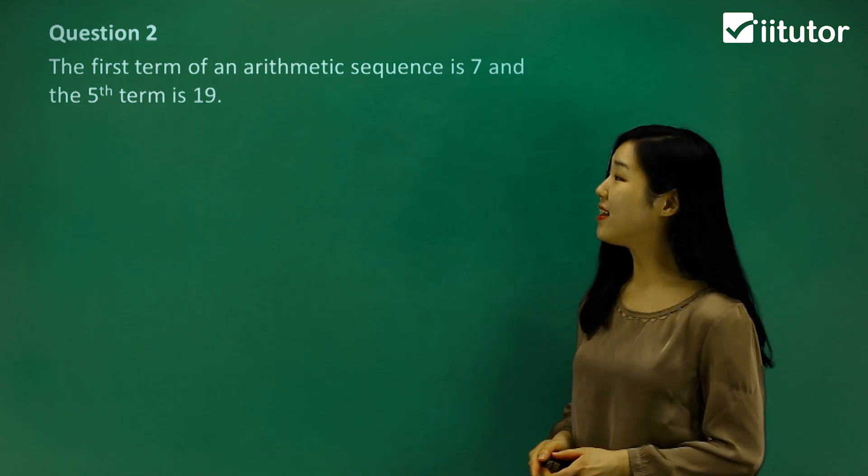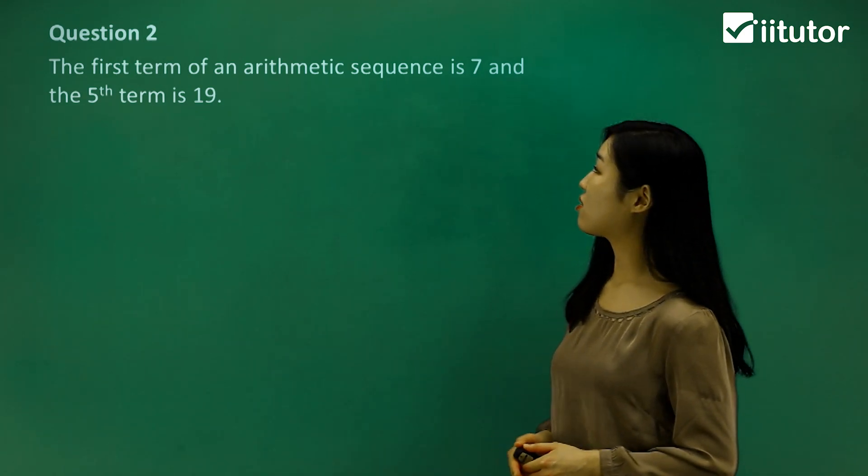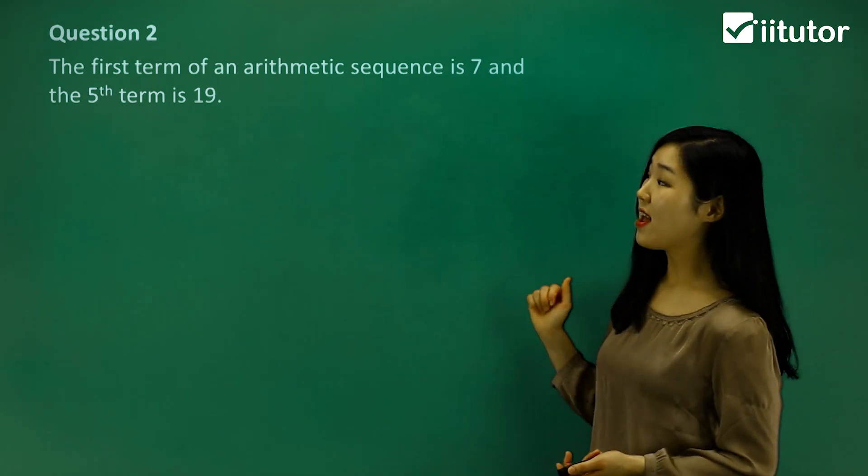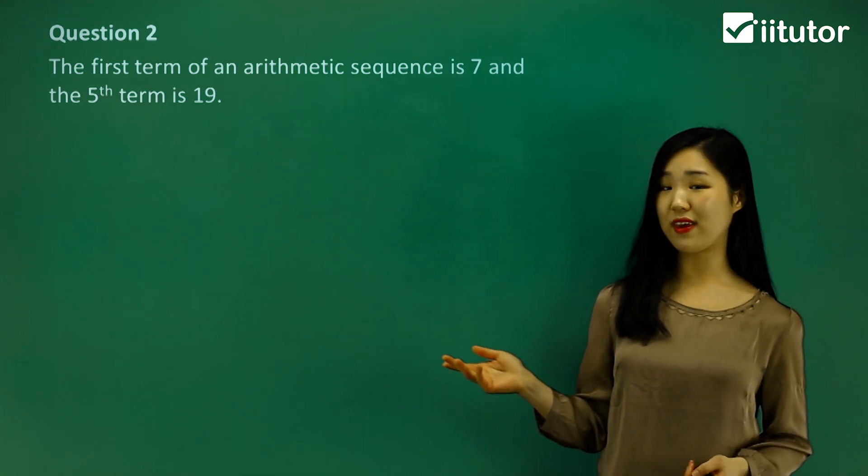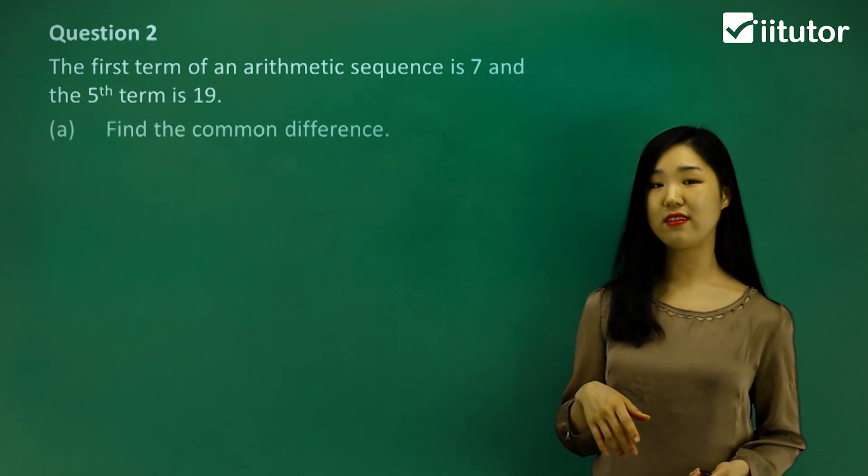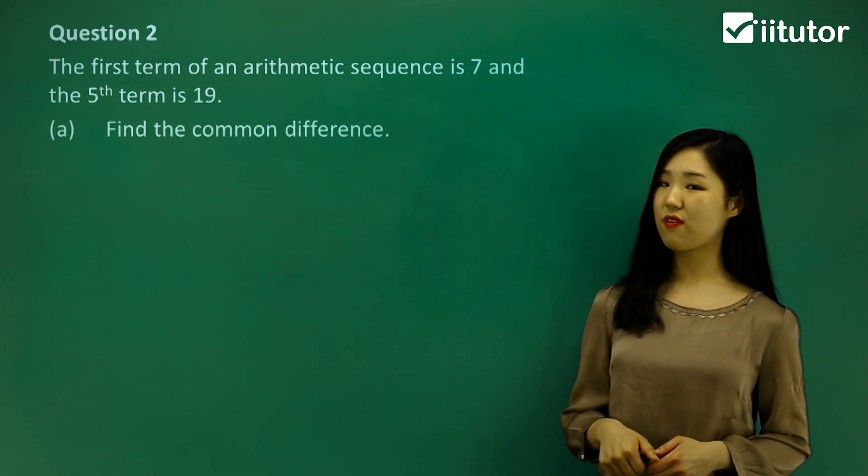Now let's do another one. It says the first term of an arithmetic sequence, they tell you it's 7, and the fifth term is 19. So we know what the first term is and the fifth term is 19. First of all, what we want to do is find the common difference.